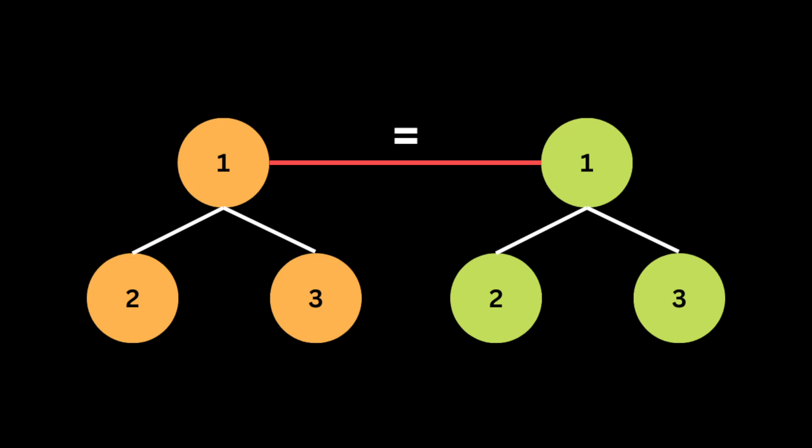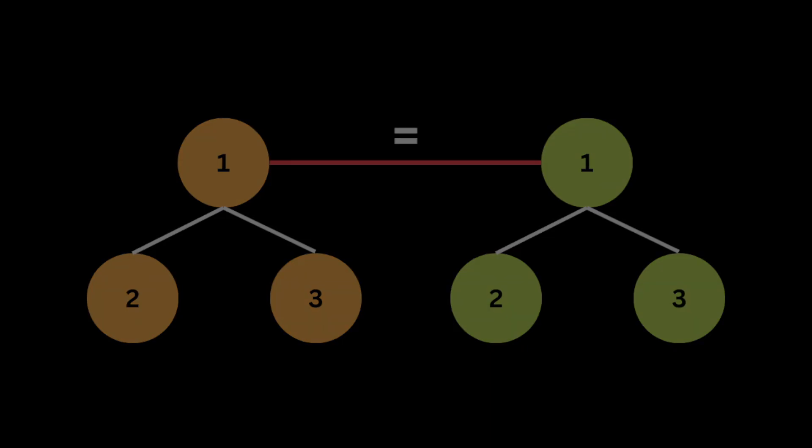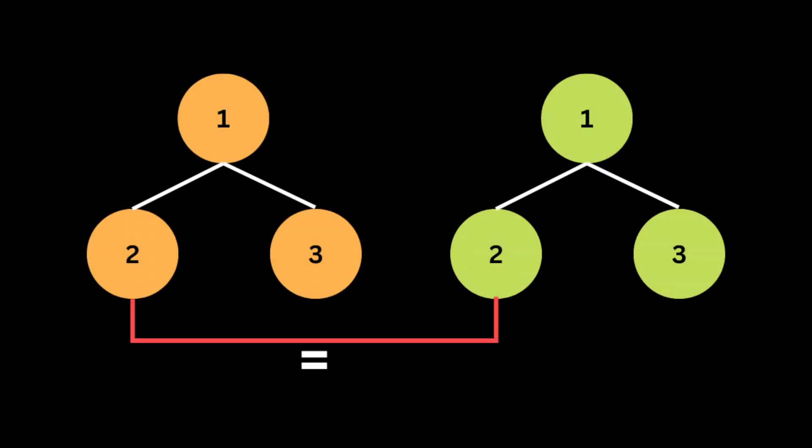Let's say we have these two binary trees. The first thing we do is compare the root of the first binary tree to the root of the second binary tree. Since the two are the same, we move to the next step where the function calls itself with different arguments — the left node of the root of the first tree and the left node of the root of the second tree. Then it compares the values of the left child of both trees, and here they are the same, so we return true.